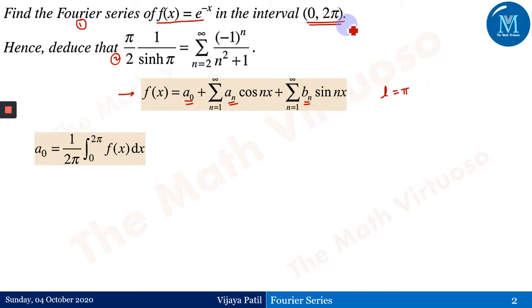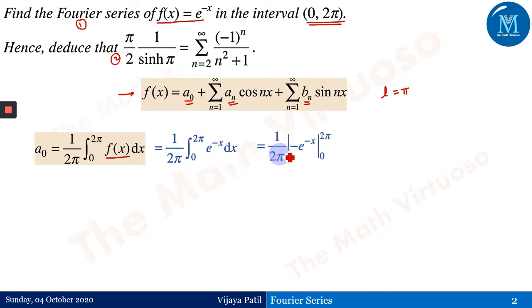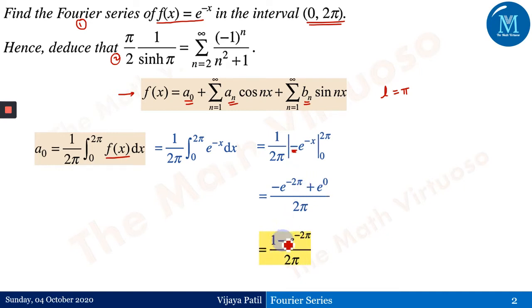Please follow the previous sessions to understand this. So a₀ = (1/2π) ∫₀²π f(x) dx. Substituting f(x) = e^(−x), the integral of e^(−x) is −e^(−x). Applying the limits from 0 to 2π — upper minus lower — the minus signs combine: minus times minus becomes plus. Therefore a₀ = (1 − e^(−2π)) / (2π).